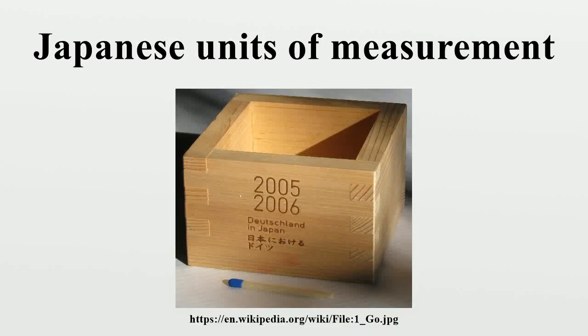Shakenho is the traditional Japanese system of measurement. The name Shakenho originates from the name of two of its units: the Shaku, a unit of length, and the Kan, a mass measurement.